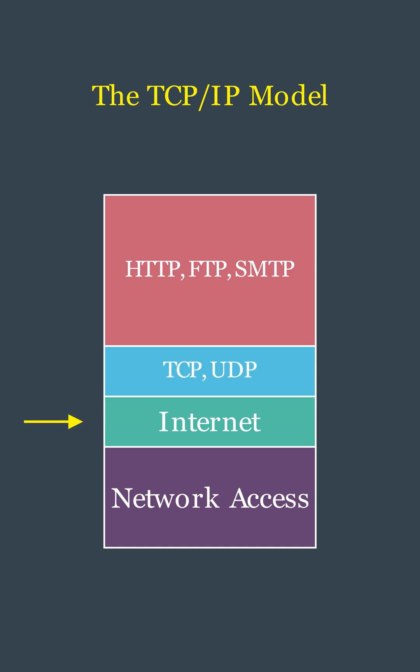Internet layer. This layer handles the addressing and routing of data packets. The key protocol is IP, which determines the best path for data to travel across the network. It also includes protocols like ICMP.